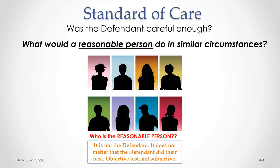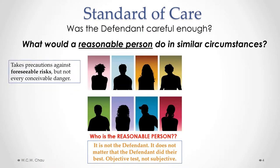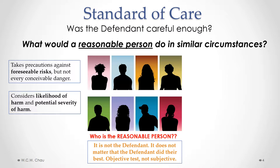We are not asking subjectively whether or not the actual person did their best to avoid the accident. We are asking whether or not a reasonable person would have caused the same accident. In determining what a reasonable person would do in similar circumstances, courts have given us some clues or guidance. Courts have said that a reasonable person takes precautions against foreseeable risks, but not necessarily precautions against every conceivable danger. Another clue is that a reasonable person considers the likelihood of harm and the potential severity of harm — how likely is something wrong going to happen and how severe will the consequences be?